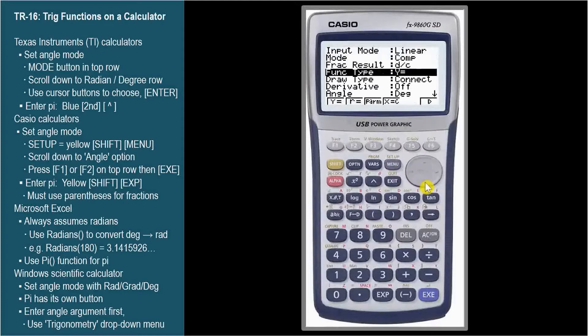Scroll down to the Angle option. The bottom line of the display shows the choices. In order, from left to right, the top row of F buttons corresponds to the choices. So here, degrees are chosen by pressing F1 and radians with F2.